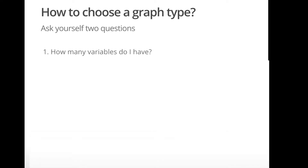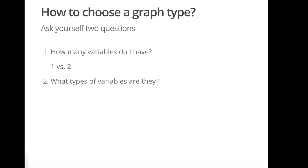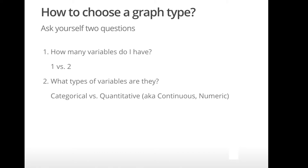Choosing a graph type can be boiled down to asking two questions about your data. How many variables do I have — one or two? And what types of variables are they — categorical or quantitative, also known as continuous or numeric? Now be careful! These questions might sound simple and trivial, but they can often be more subtle when your research question is not well stated, or when you're not careful to think about your data structure.